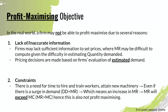In the real world, a firm may not be able to profit maximize due to several reasons. First, due to a lack of accurate information — some firms lack information on how to set prices, how to reduce costs, and what the current additional revenue is. This is because it is hard to even estimate quantity demanded in the first place, and that leads to a ripple effect which prevents a firm from estimating how much revenue it is making.